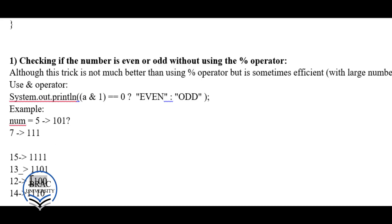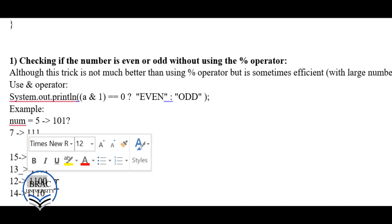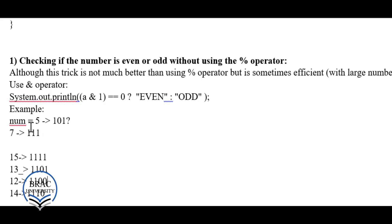If the last bit of a number is 1, the number is odd; if it is 0, the number is even. So how do we check whether the last bit is 1 or 0? Just AND the number with 1.